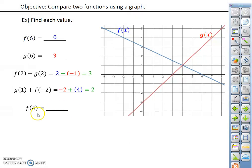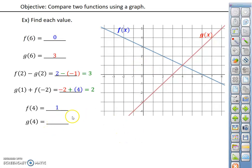Here we're going back to the basic idea of what is f of 4 equal to. So f of 4 — here's where x is 4. We notice that the two functions, f of x and g of x, are actually intersecting at that point, so that particular point is part of both functions. So f of 4, which would be this point here, has a y coordinate of 1. And g of 4 would also be equal to 1.